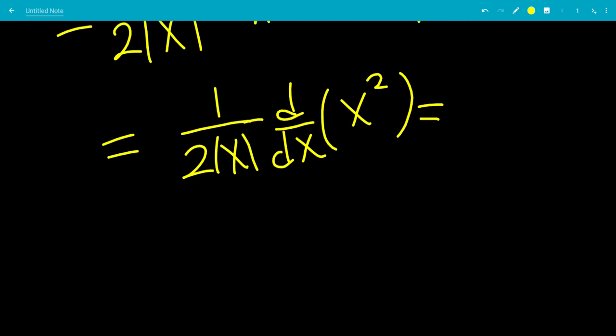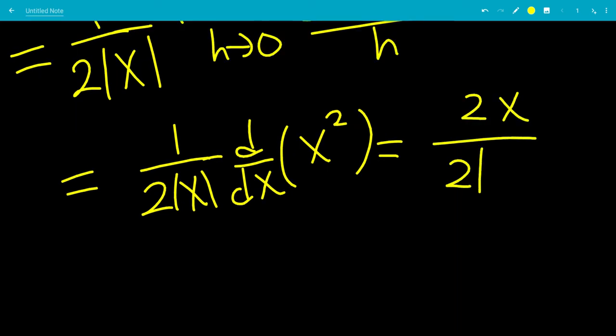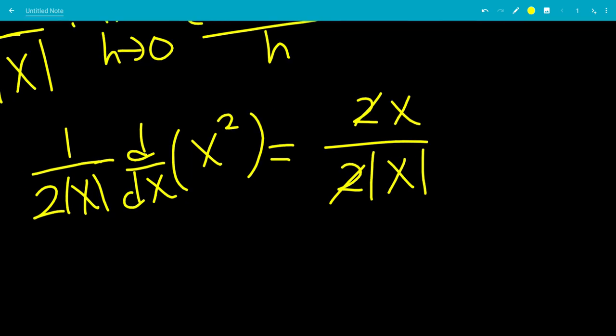But you know what the derivative of x squared is? That's two x all over two absolute value of x. The two and the two will cancel because it's not equal to zero. So the answer is x over absolute value of x.